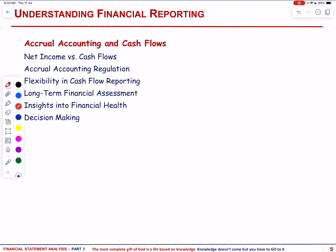Net income based on accrual accounting may differ from actual cash flows due to timing differences in revenue recognition and expense matching. Regulations like US GAAP and IFRS aim to prevent manipulation of earnings under accrual accounting, enhancing transparency and reliability. Cash flow statements, while crucial for tracking short-term liquidity, can be more susceptible to management influence compared to earnings reports. Accrual accounting provides a comprehensive view by recording economic events as they happen, influencing both balance sheets and income statements.